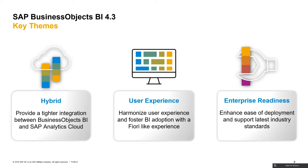For the 4.3 release, we have three pillars. The first is Hybrid — how you'll be able to reuse what you've created on-premise with the cloud, specifically with SAP Analytics Cloud. The second is User Experience — new innovations in the interfaces inside 4.3. And the third is Enterprise Readiness — cumulative innovations to smoothly update or upgrade your BI platform and support the most recent data sources.